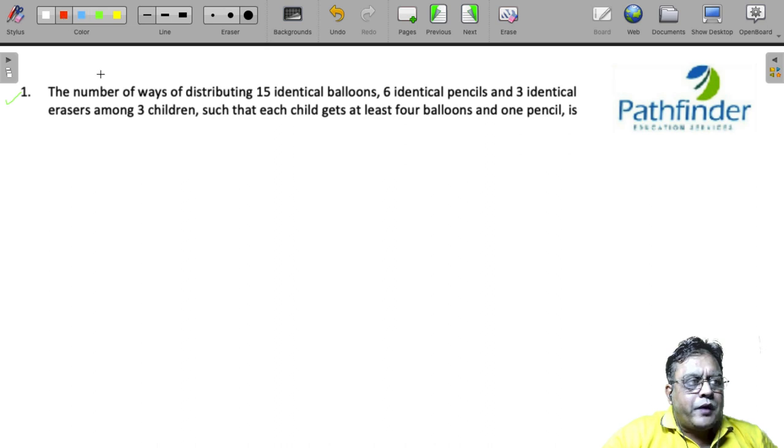The number of ways of distributing 15 identical balloons, 6 identical pencils, and 3 identical erasers among 3 children such that each child gets at least 4 balloons and 1 pencil.